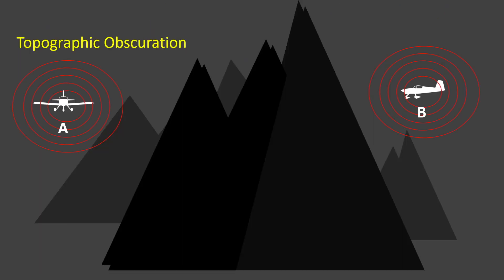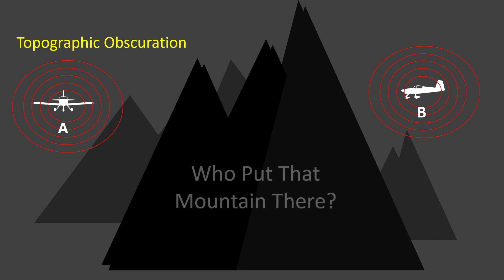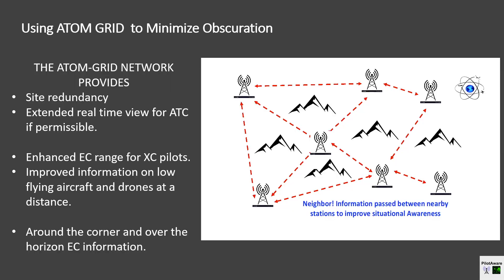The second type of obscuration to consider is the more obvious topographical obscuration, caused when flying in mountains at low level or beyond the electromagnetic horizon. Transmissions from aircraft A will be completely obscured from aircraft B by the mountain, and vice versa. This is a problem for both air-to-air and air-to-ground transmissions, which both need to be addressed. Having an extensive encrypted ground network such as the PilotAware ATOM grid network can help provide answers to the problems of both types of signal obscuration between aircraft.